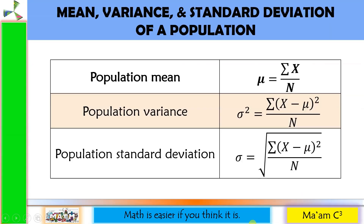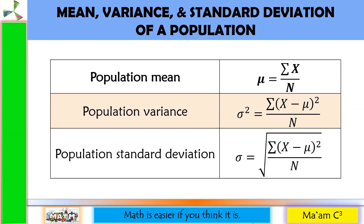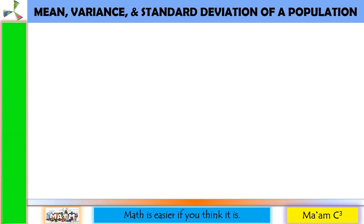Here are the formulas for mean, variance, and standard deviation of a population. We are going to discuss each one together with an example. Let's start.